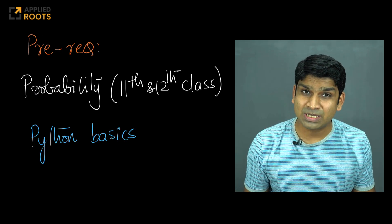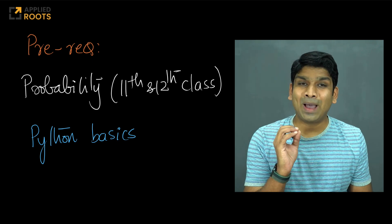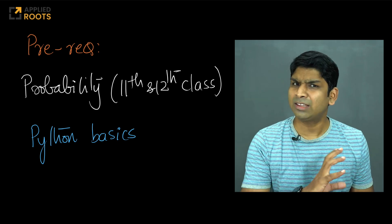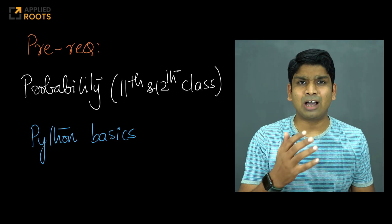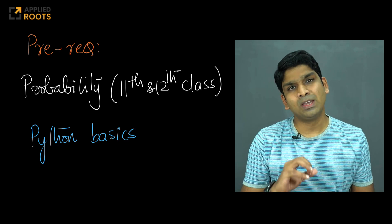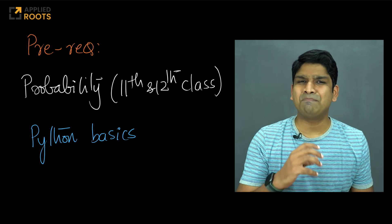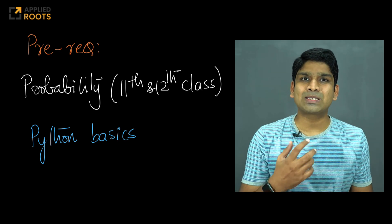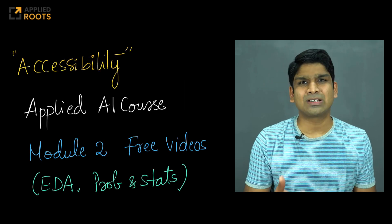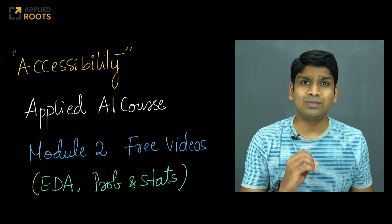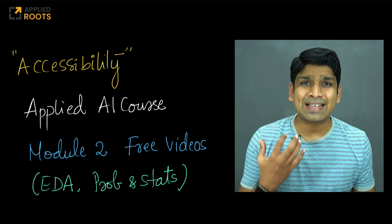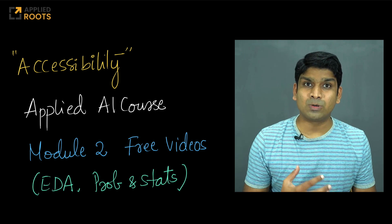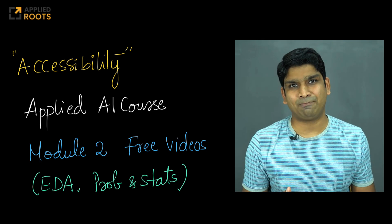What are the prerequisites for this session? Very simple — you need to know basic probability concepts from 11th and 12th class mathematics, nothing beyond that. Everything beyond that we will cover briefly in our sessions. You also need to know the basics of Python programming: basic for loops, if-else conditions, basic classes, and functions, so that you can understand the code we write. We also want these sessions to be accessible to learners from a wide spectrum of backgrounds.